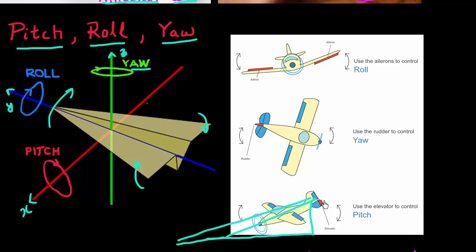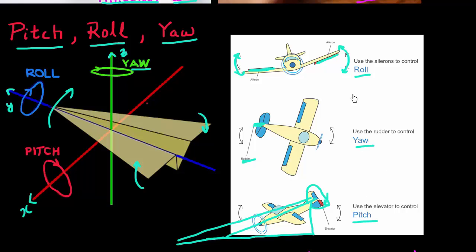If you ever fly a manual plane like a Cessna aircraft, pitch is controlled by the elevator located in the tail part of the plane. The roll — the sideways movement of the plane — is controlled by the ailerons located on the wings. And the third motion along the z axis, which enables you to change directions, is controlled by the rudder, also located towards the tail end of the plane. So these are the three terms: pitch, roll, and yaw.